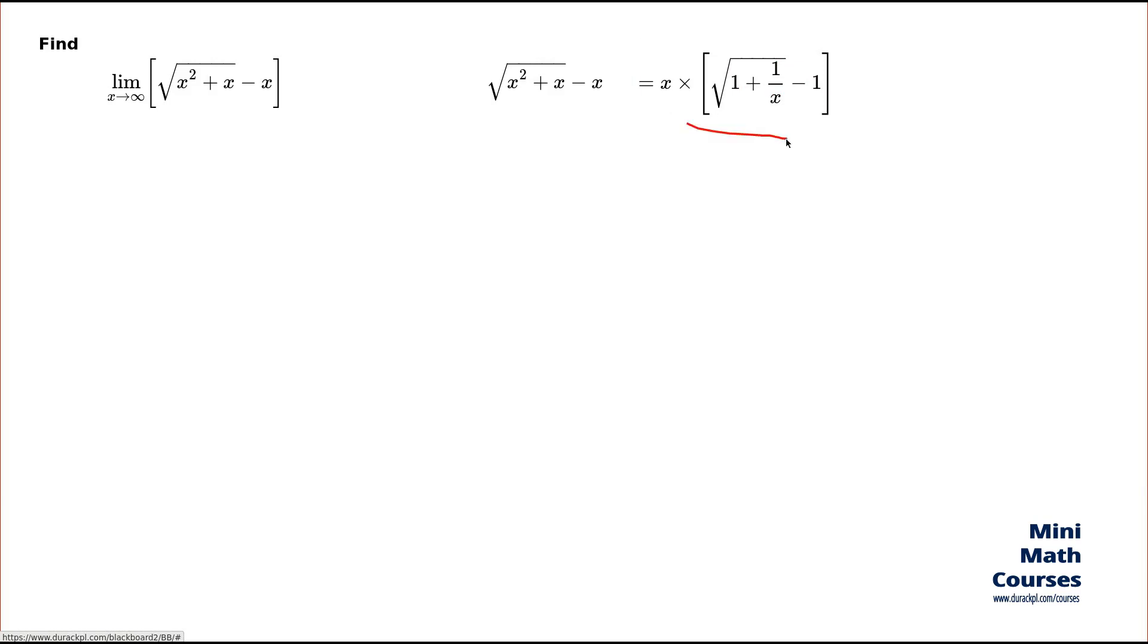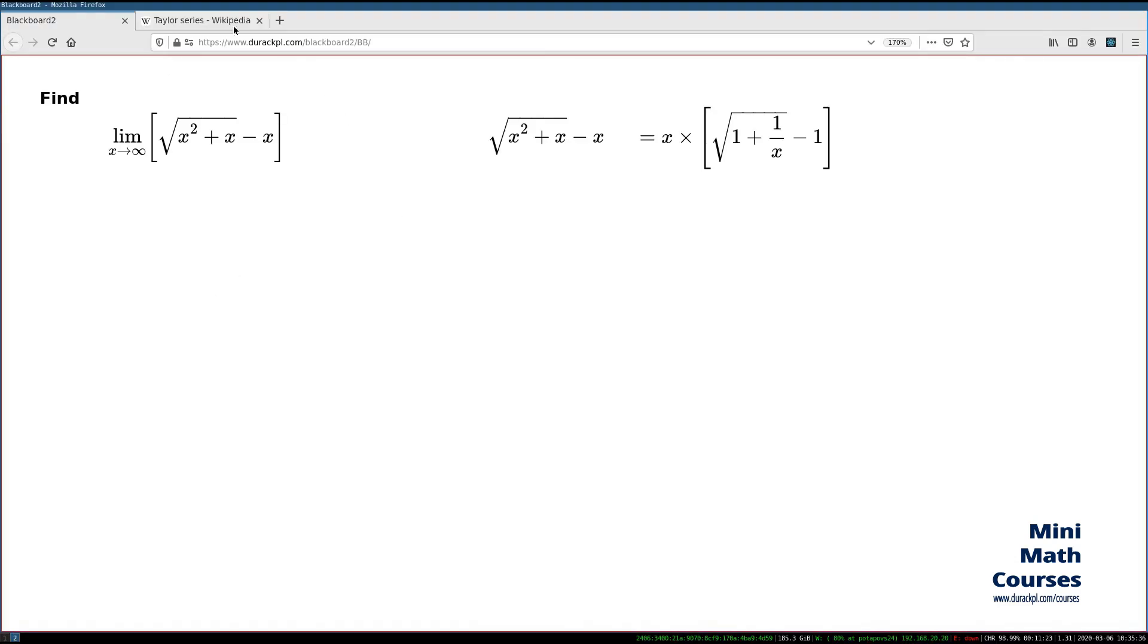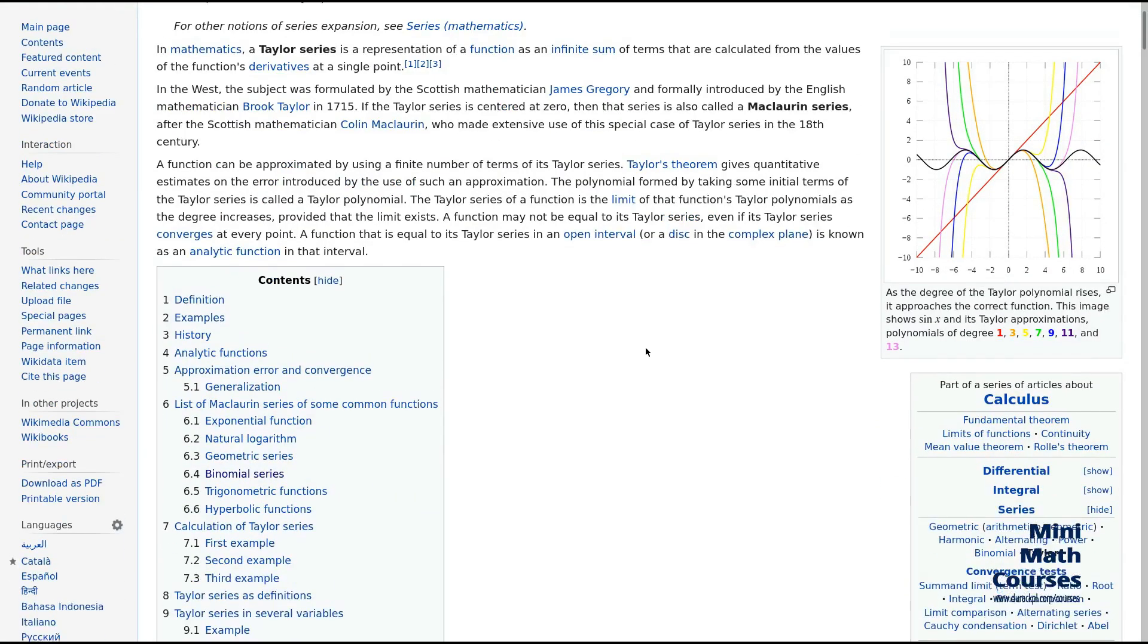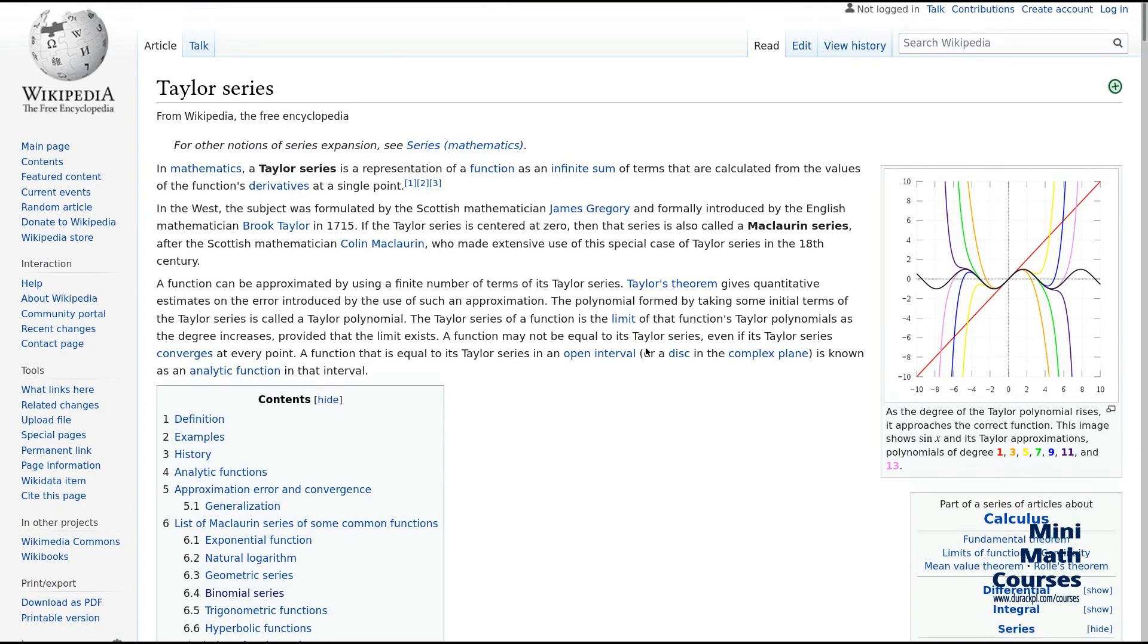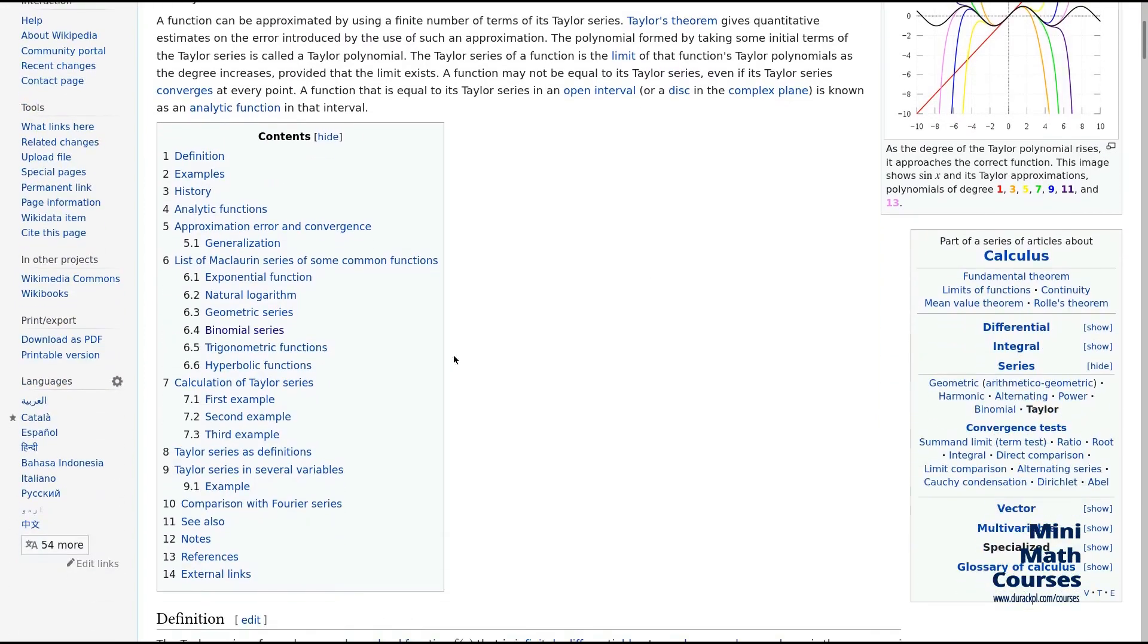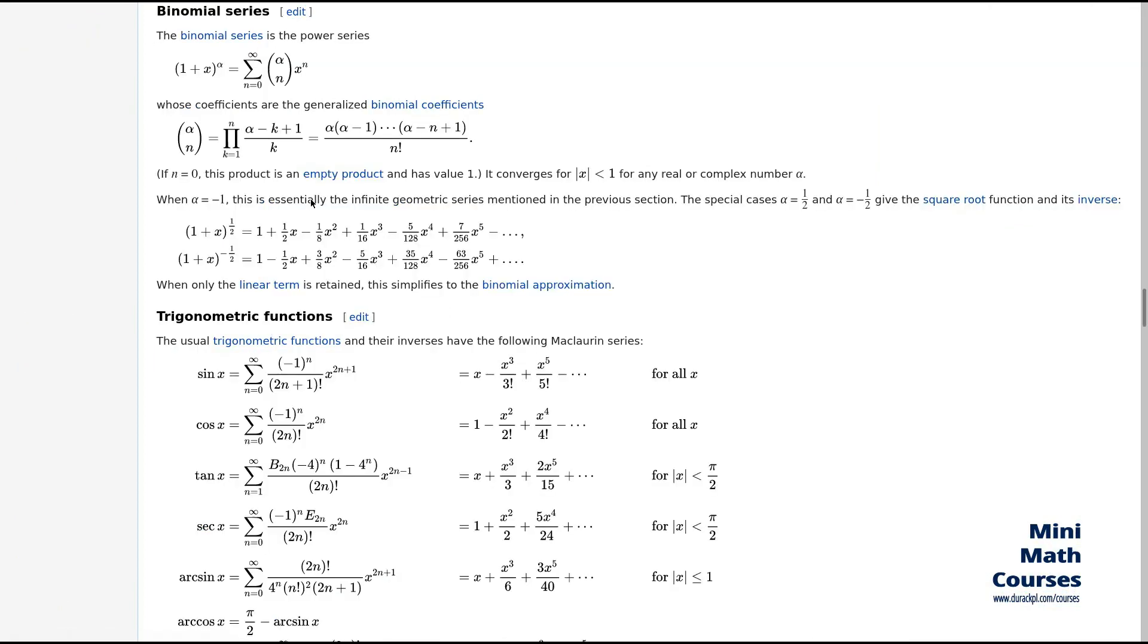And now this second factor is in the form where we can use the Taylor expansion. When I say Taylor expansion, I particularly mean very specific Taylor expansion. This is the one which you can find on Wikipedia page here. This is a Wikipedia page on Taylor series and there is a section here which is called binomial series. This is the one we're about to use.